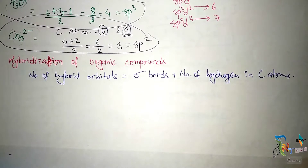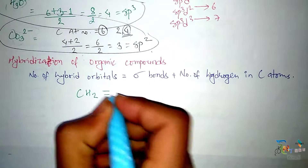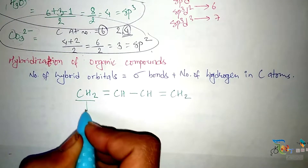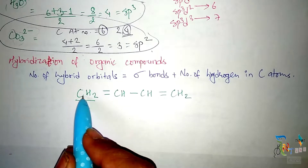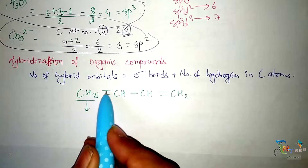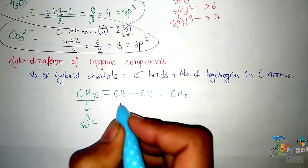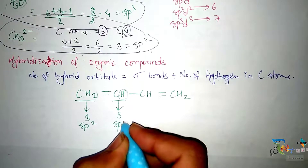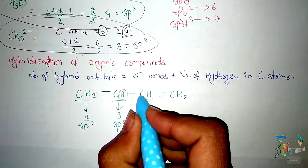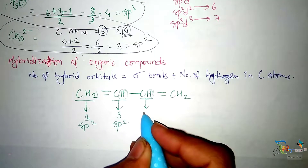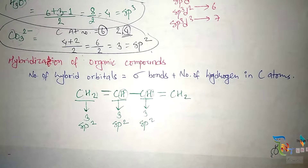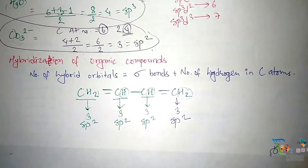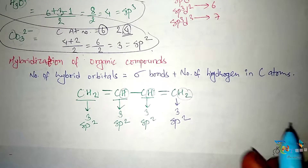Let's apply this formula to CH₂=CH-CH=CH₂. For the first carbon: one sigma bond plus two hydrogens = 3, so it is sp2 hybridized. Similarly, the second carbon: one sigma bond plus one hydrogen = 3, also sp2. The third carbon: same count of 3, also sp2. The fourth carbon: one sigma bond plus two hydrogens = 3, also sp2 hybridized.